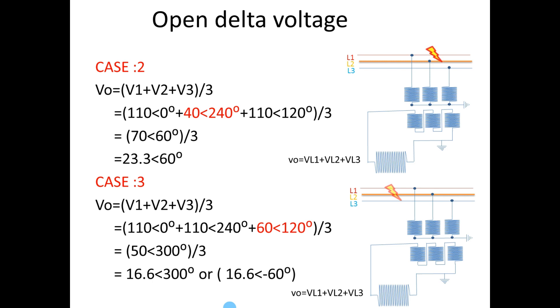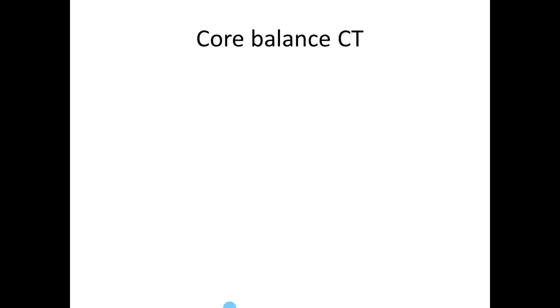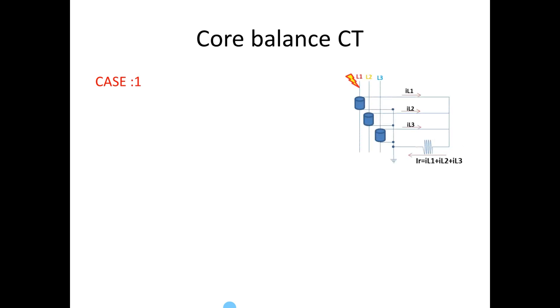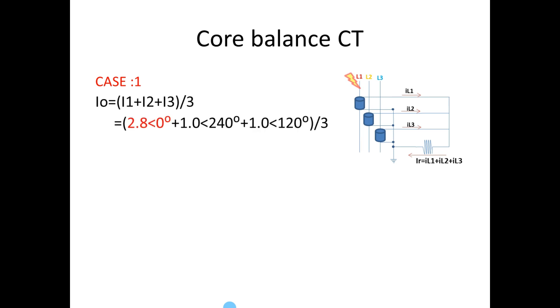Now we can go for calculating the current magnitude and angle during the fault condition. For Case 1, considering the fault on R phase, the R phase fault current is 2.8A. The I0 current we get is 0.6A at 180 degrees. We will note down this value.